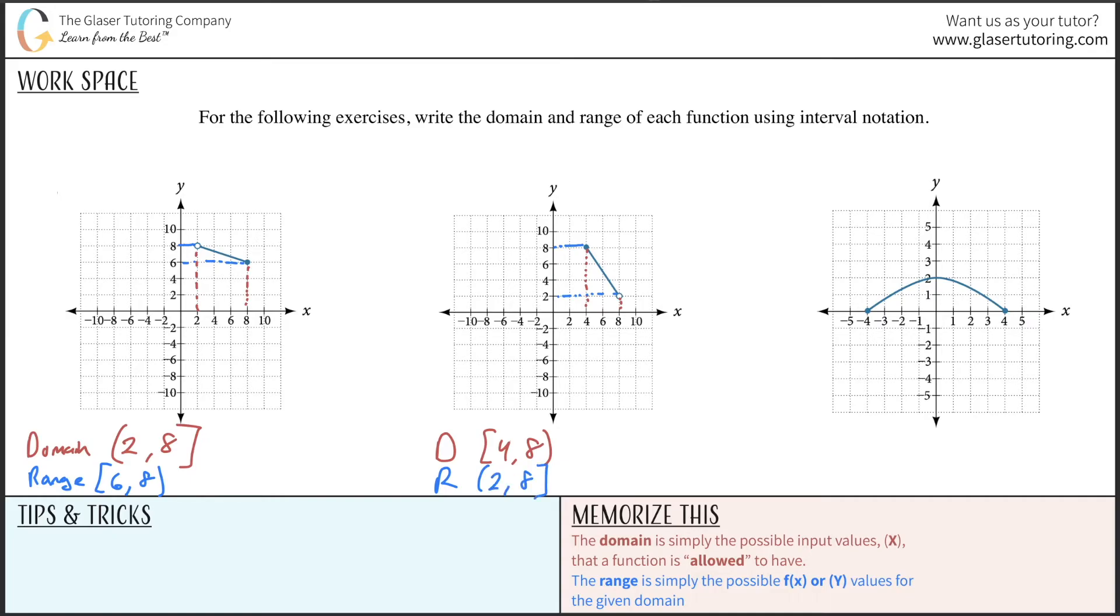Last but not least, looking at this third graph, the domain here goes all the way from negative 4 to 4 on the x-axis, inclusive of both because it's a filled in circle. So the domain is [-4, 4].